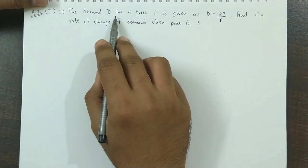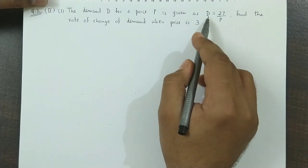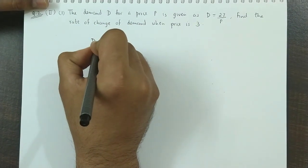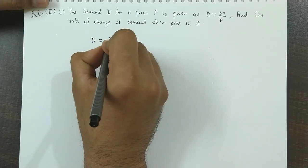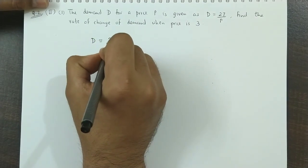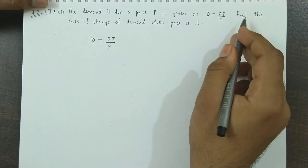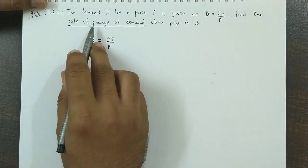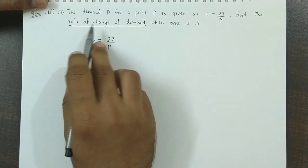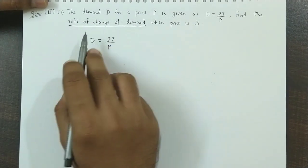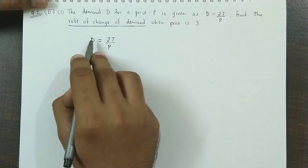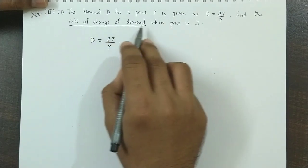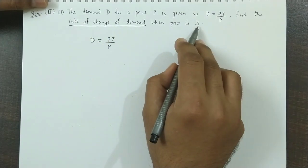The demand D for a price P is given as D equal to 27 upon P. This relation is given as demand and price. Find the rate of change of demand. When the phrase comes to rate of change of, which rate of change of is demand? We have to find the derivative of demand with respect to price. What is the rate of change of demand when the price is 3?